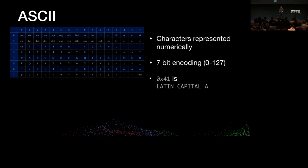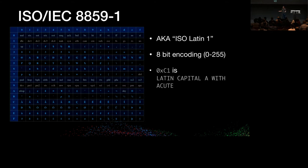Encoding basics. This is ASCII. In computer systems we represent characters using numbers. ASCII was a 7-bit encoding, which means it has 128 possibilities, 0 to 127. In ASCII, hex 41 is Latin capital A. But that doesn't work — it was great for teletype terminals in the 70s, but it doesn't work for European languages with accents.